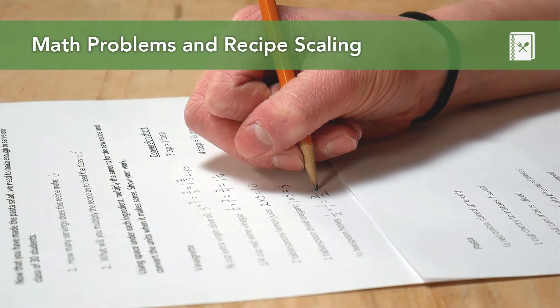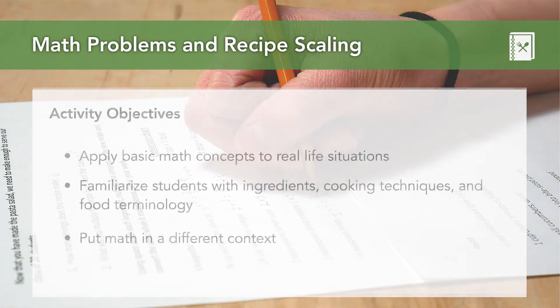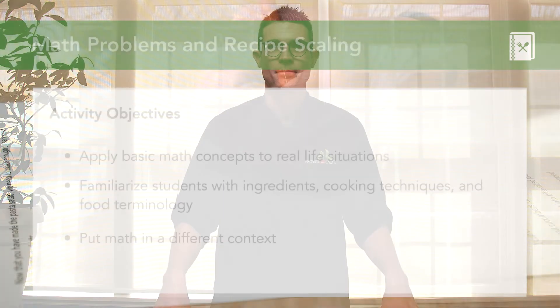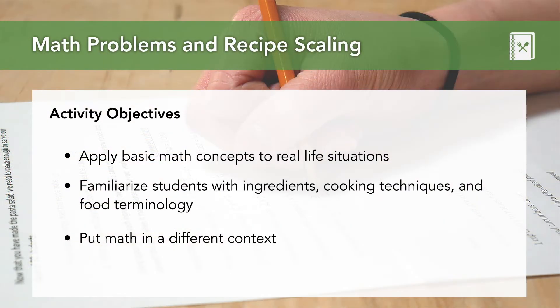For the next activities, we're going to recommend using math problems by scaling recipes and exploring unit conversions. This activity is recommended for junior to intermediate students and can help children apply basic math concepts to real-world situations. It can also help to familiarize students with ingredients, cooking techniques, and introduce food terminology. Knowing how to scale or adjust a recipe is just simple math, but we regularly observe in our programming that when students are asked to double or halve a recipe, many fail to apply basic fraction, addition, and subtraction techniques.